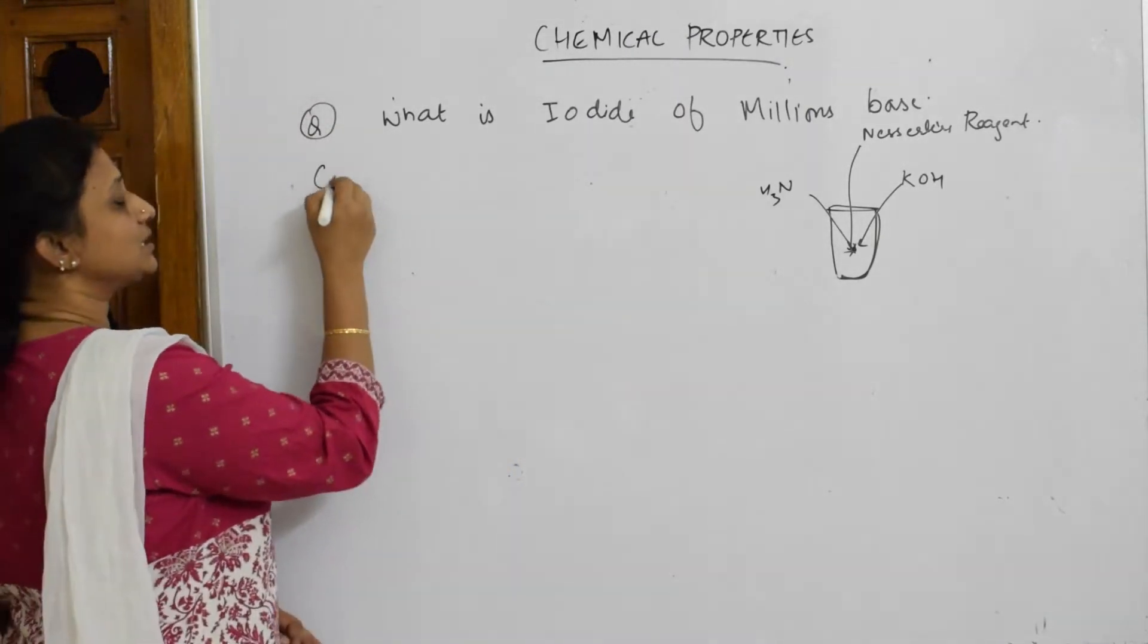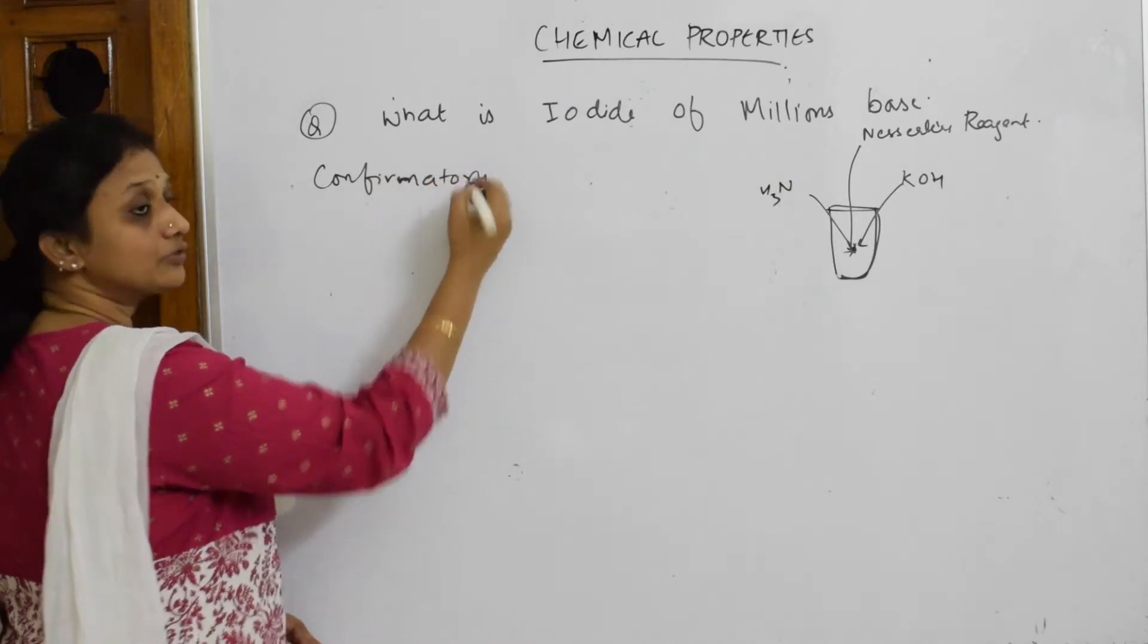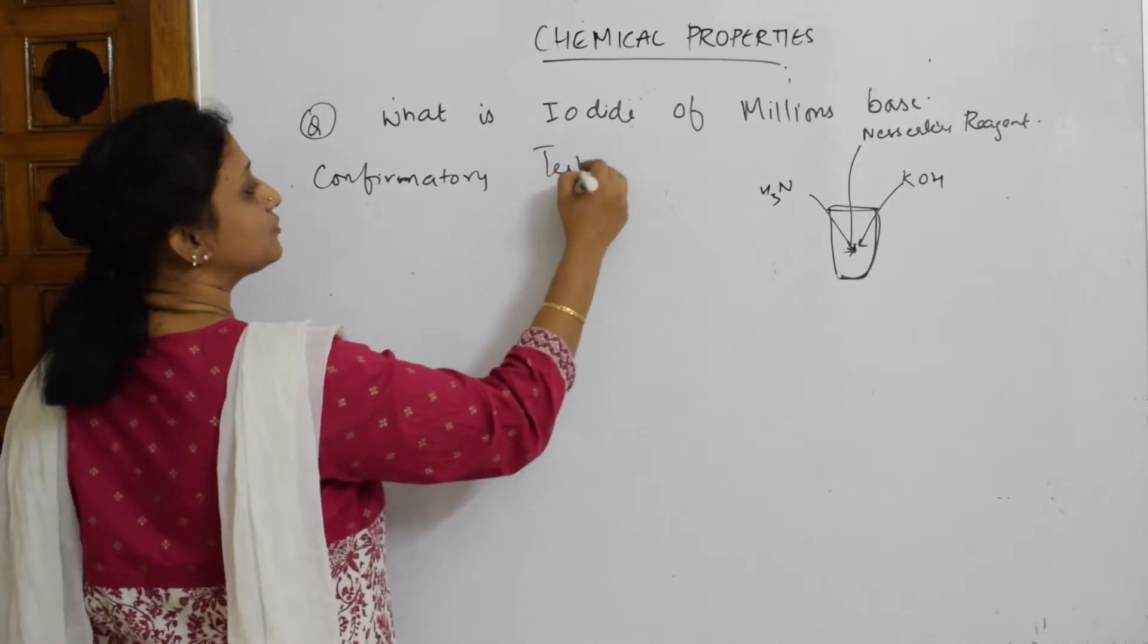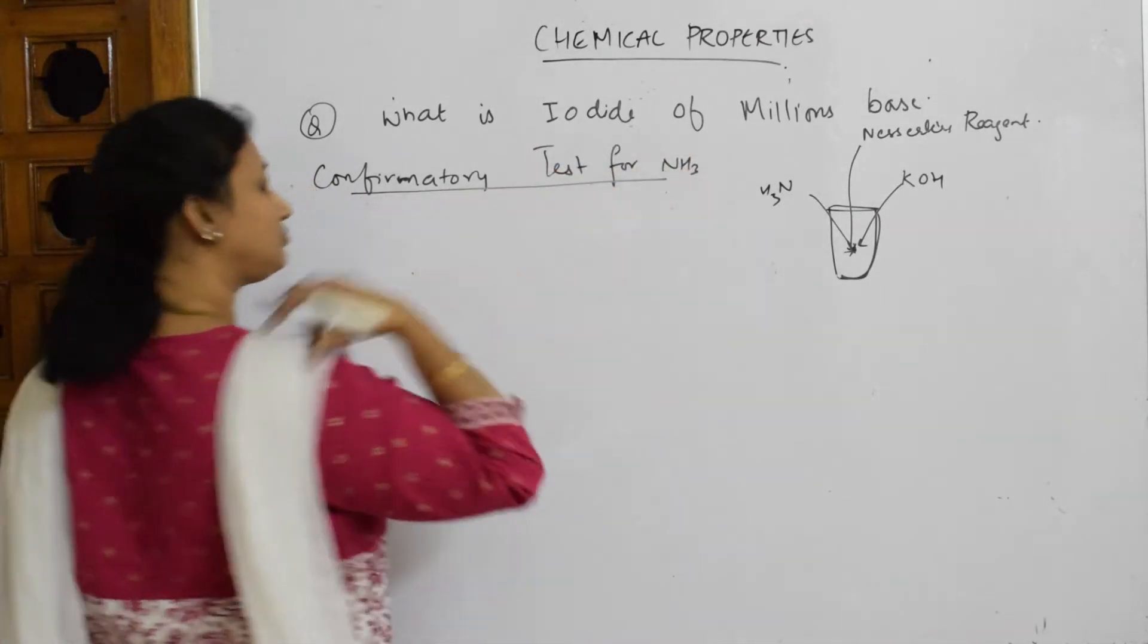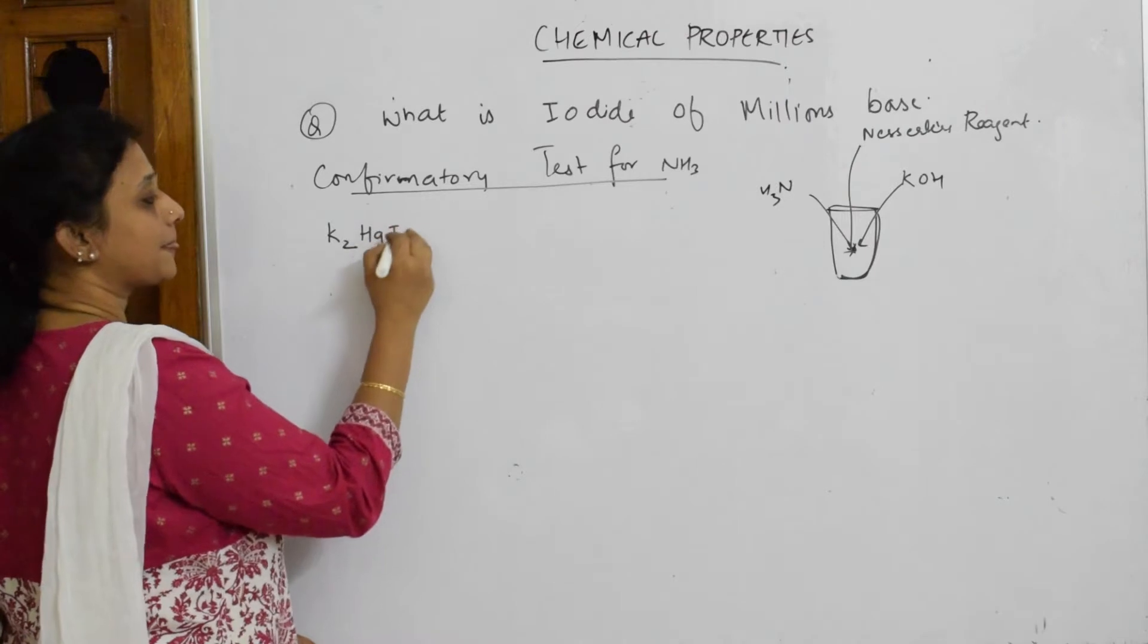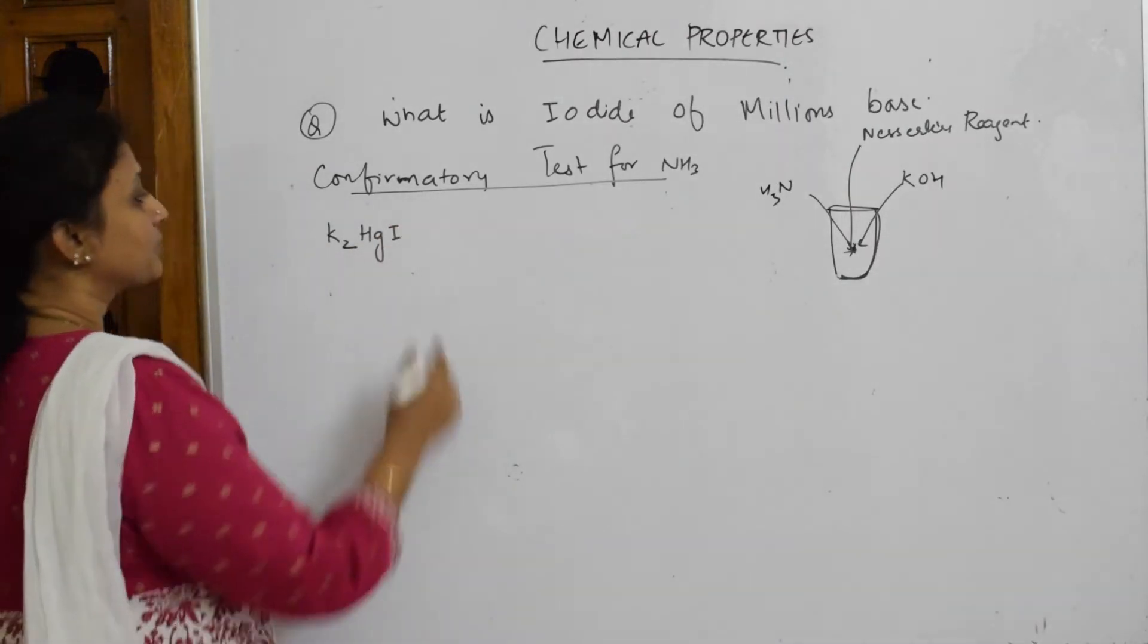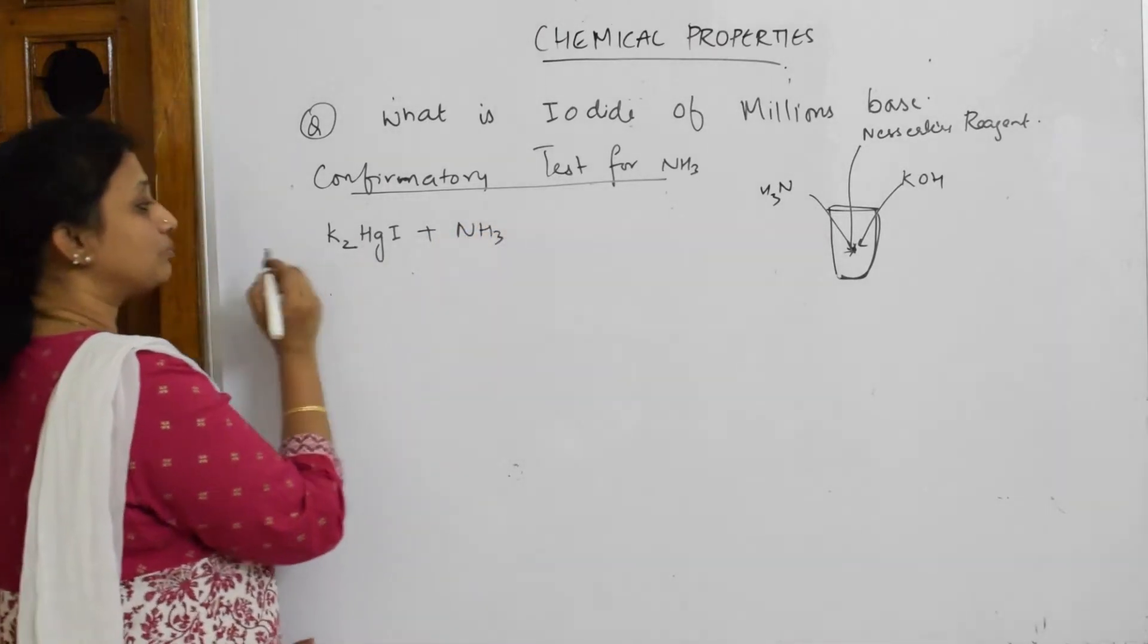Let us write the reaction first. This is basically a confirmatory test for ammonia. This will be useful for your practical viva question. Please remember: confirmatory test for ammonia. Now what should you do? First take the Nessler's reagent.